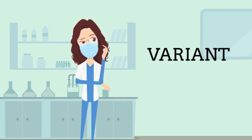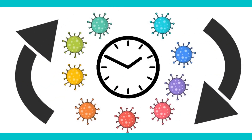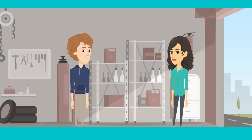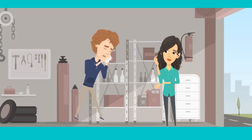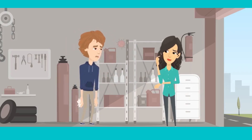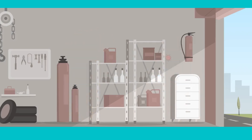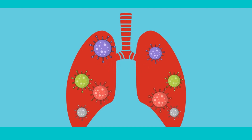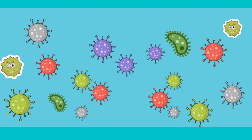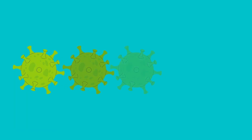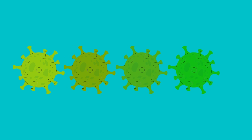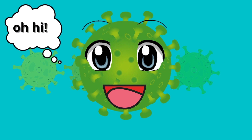What exactly is a variant? Viruses always change over time. Each time a virus goes from one person to another, that's an opportunity for them to mutate, adapt, or change — and that's normally what they do. Viruses multiply by copying their genome over and over again, and this imperfect copy is a variant.